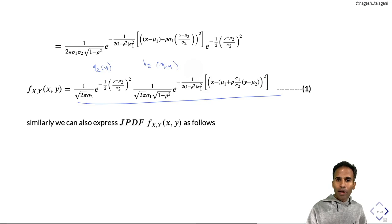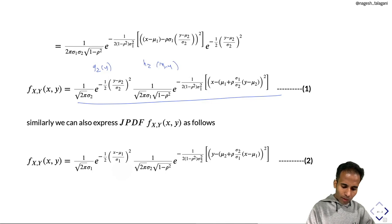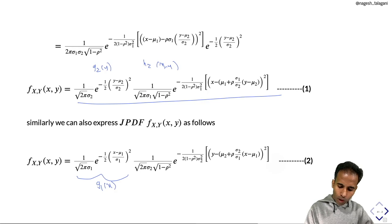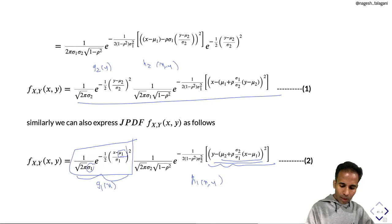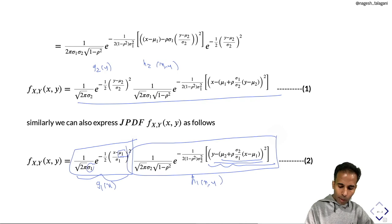Similarly, we can also factorize the joint pdf as g1(x)·h1(x,y), where g1(x) = 1/(√(2π)·σ1) · exp{−1/2·((x−μ1)/σ1)²} is the pdf of Normal(μ1, σ1²), and h1(x,y) is the pdf of a normal with mean μ2 + ρ(σ2/σ1)(x−μ1) and variance (1−ρ²)σ2², which is the conditional pdf of y given x.